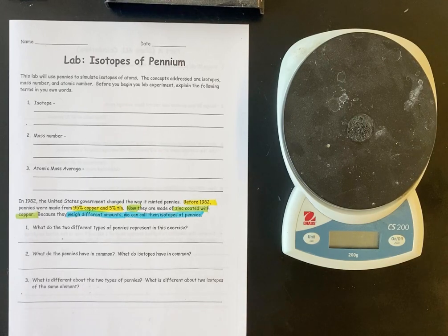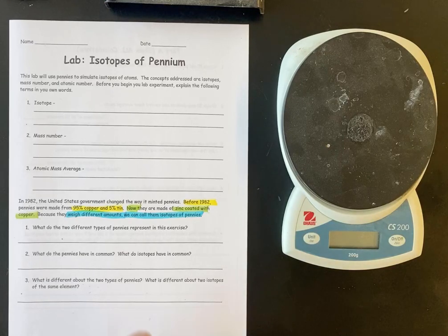The isotopes are when you have the same element, but they have different masses because they have different numbers of neutrons. Well, in the penny example, we have two sets of pennies, and one is heavier than the other, but they're both pennies, and that should be enough to answer the questions one through three.